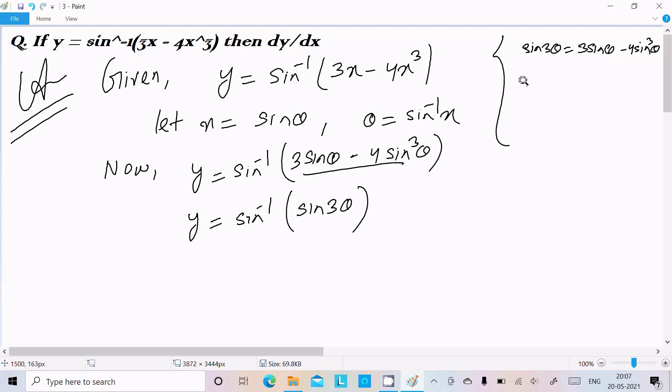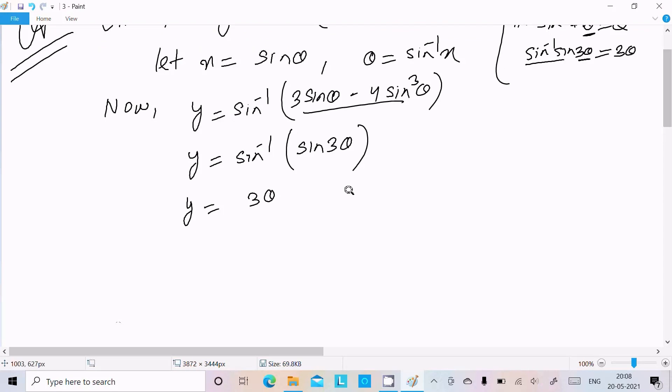Next we already know sin inverse sin θ = θ. So there is sin inverse sin 3θ. If you apply sin inverse with sin, whatever term is inside you should write. So we can write y = 3θ.